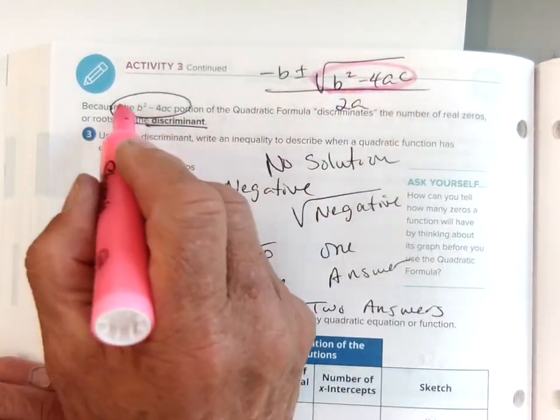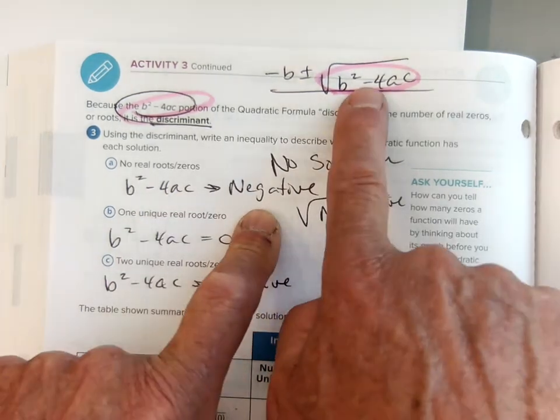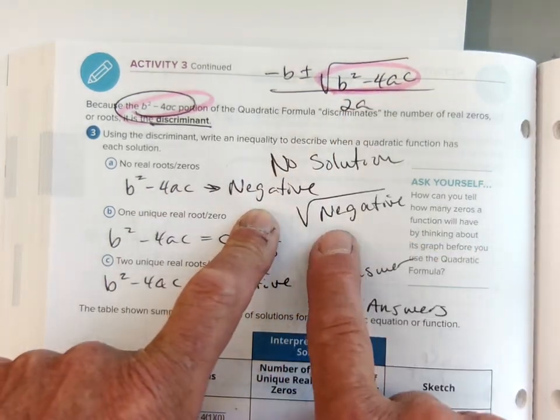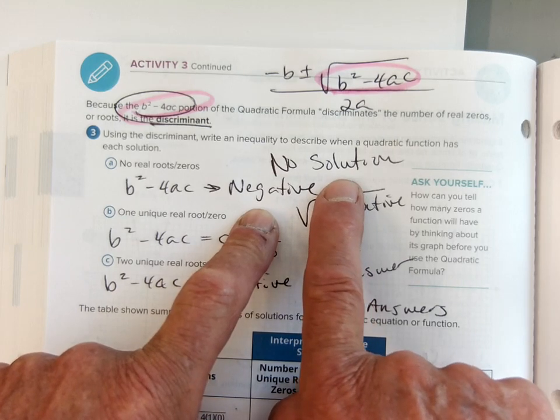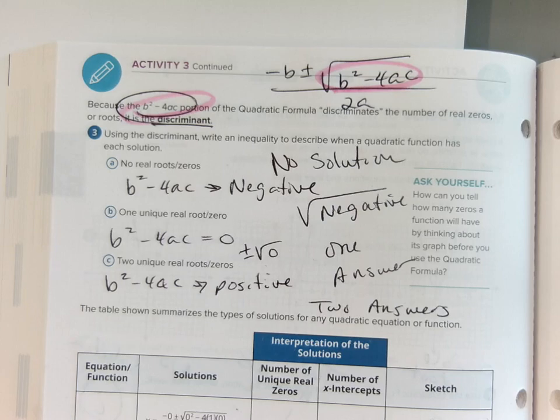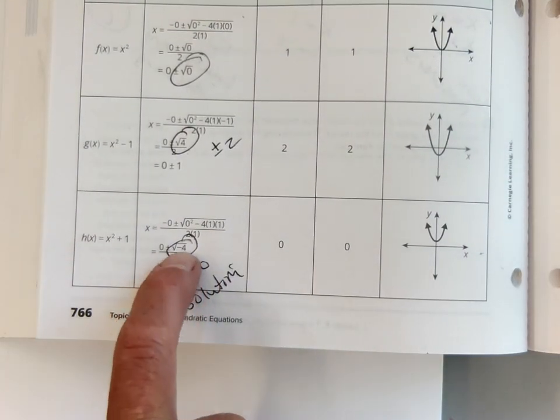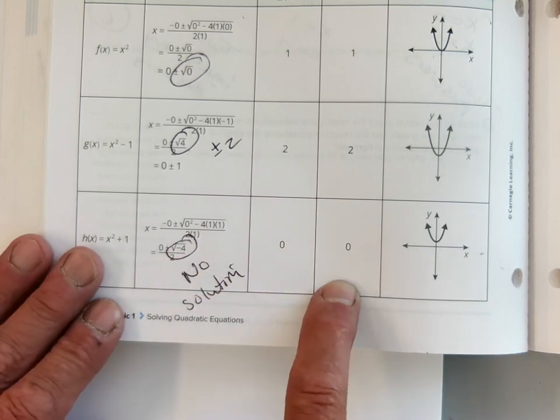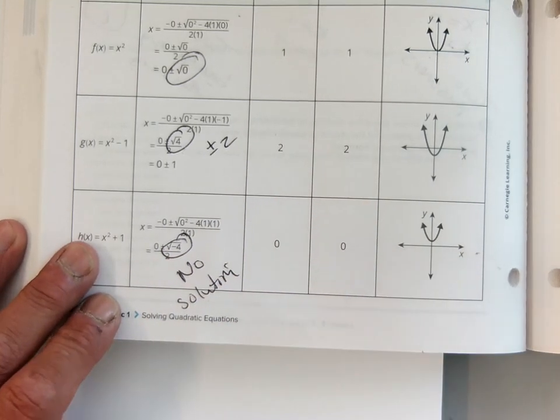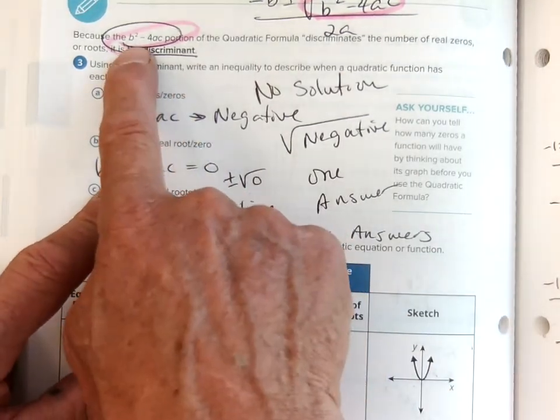If the discriminant is negative, then you take the square root of a negative number—you can't do it. If that happens, there's no solution. An example of that, we saw it down here. We took the quadratic formula, we wound up with a negative square root. You can't do a square root of a negative number, so we know there's no solution.